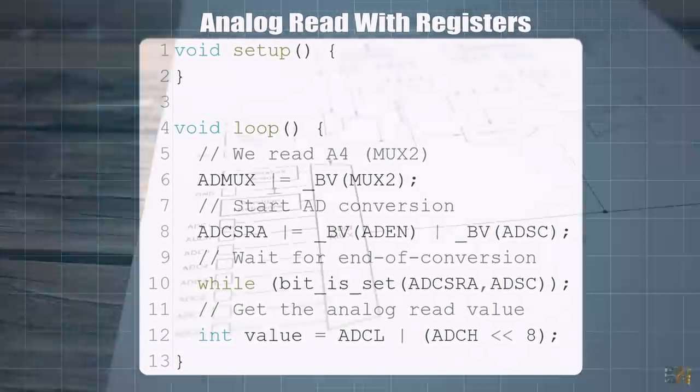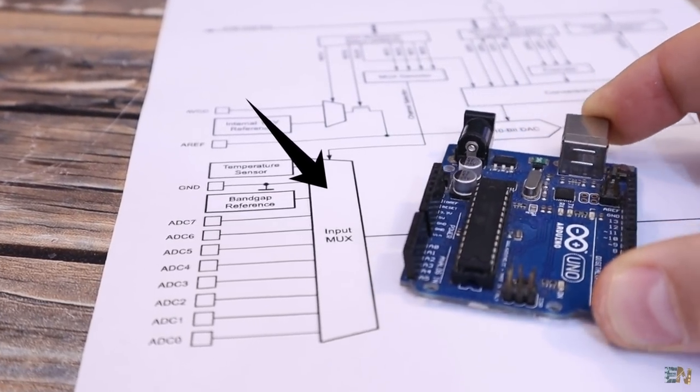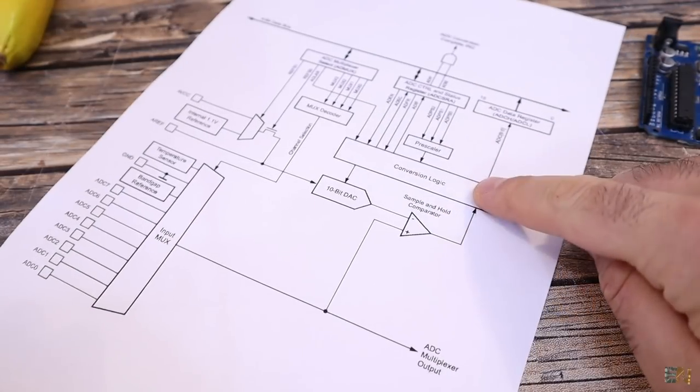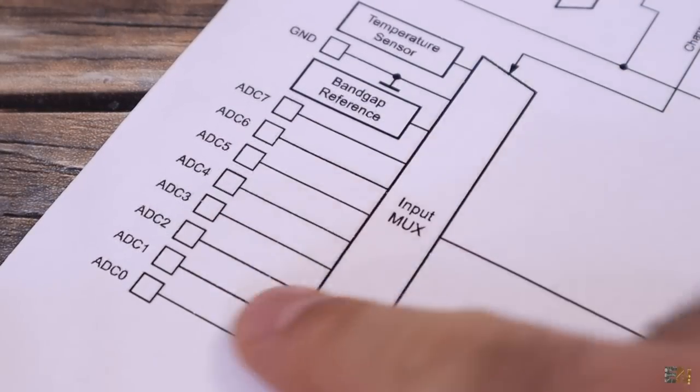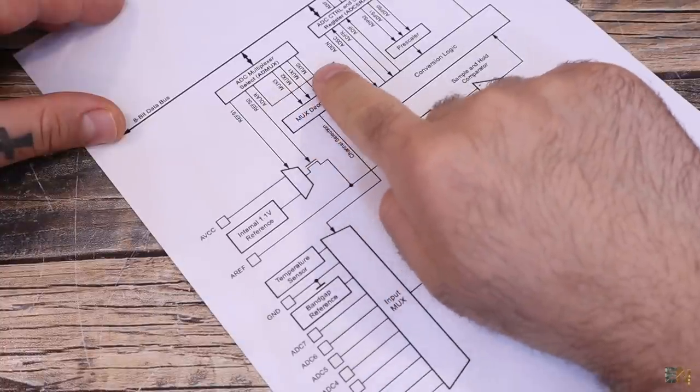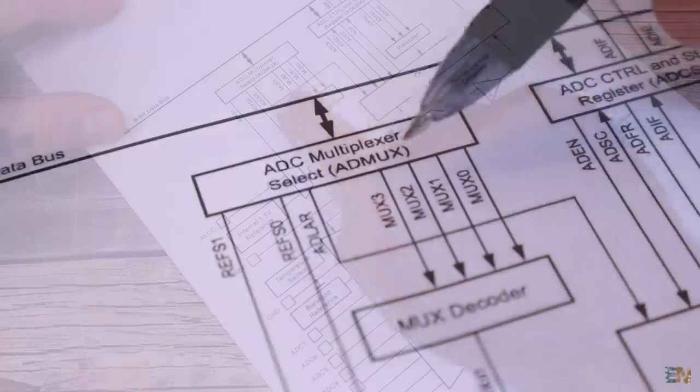First, let's select the input of the ADC. We have just one ADC conversion block so we need to select the input separately and make the measurement. As you can see, the multiplexer for the input is controlled with these 4 bits, from max 0 to max 3.